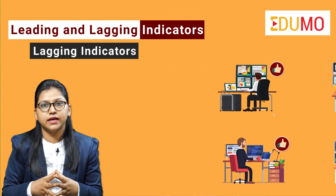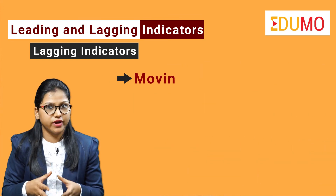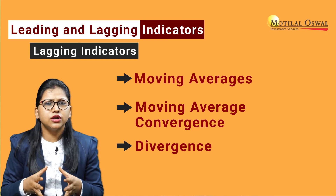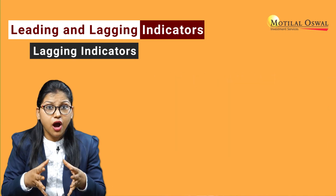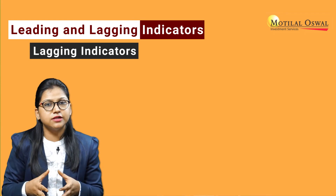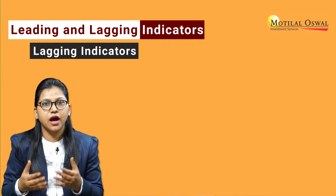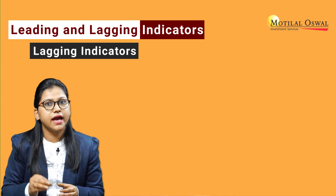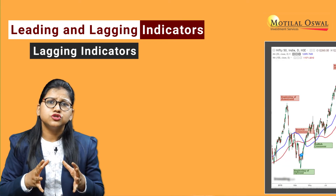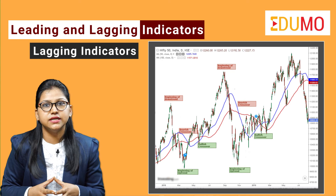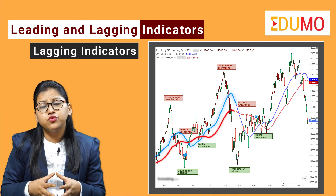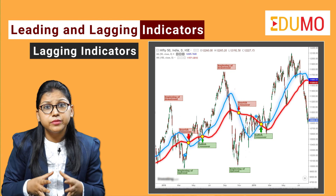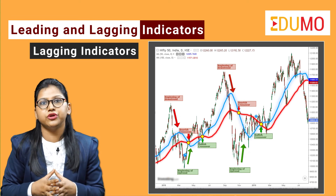Most popular lagging indicators are moving averages and Moving Average Convergence and Divergence. Let us take an example using simple moving average 50 and 100. From the chart of Nifty here, we can see how the moving average bullish and bearish crossovers confirm the beginning of an uptrend and downtrend.